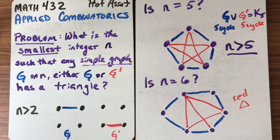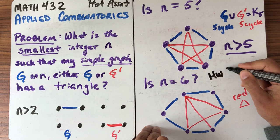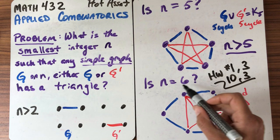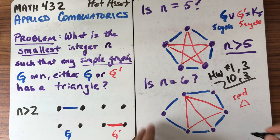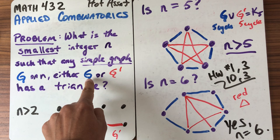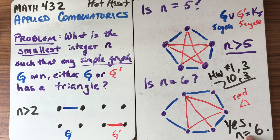I haven't given a counterexample yet, so it's still possible that n equals 6. And in fact, if you look at homework set 1, problem 3, or if you look at homework 10, problem 3, they both prove that actually, no matter how I do it for n equals 6, I'm always going to get either a blue triangle or a red triangle. And in fact, yes, n is equal to 6 for this problem. The smallest integer such that any simple graph on n either has a triangle or its complement has a triangle is n equals 6. There's no way to draw a simple graph on 6 vertices such that neither the graph nor its complement has a triangle.